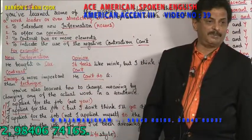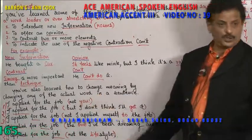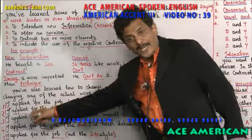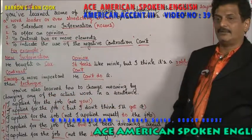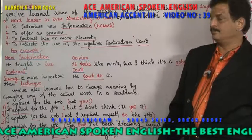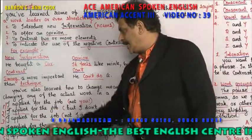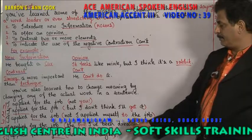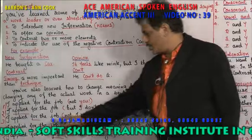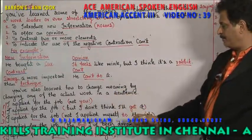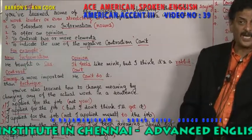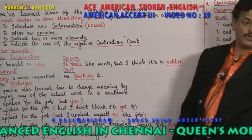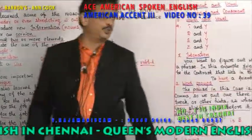'I applied for the job' — stressing 'I' means nobody else, not you, only I applied. 'I applied for the job' — stressing 'applied' means I don't think I will get it, but I did apply. 'I applied for the job' — stressing 'for' means not I applied myself to the job. 'I applied for the job' — stressing 'the' means the one I have been dreaming about for years. 'I applied for the job' — stressing 'job' means not the lifestyle, only for the job I applied. So when you stress on each word, the meaning changes.